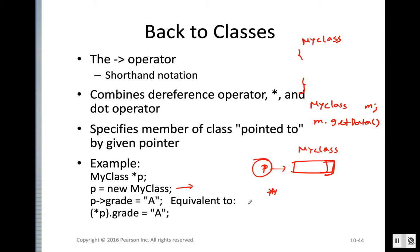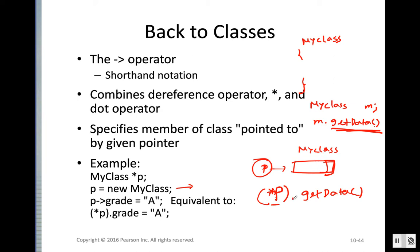Now what about using pointer p? How can we access the member function using the pointer? We can access the data at the address the pointer is pointing to using the dereference operator. We can access all the functions using the dot operator, but we also need the dereference operator. So it's (*p).getData() — meaning the address p is pointing to, which is the MyClass object, and using the dot operator we access all the public functions.